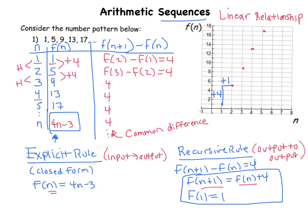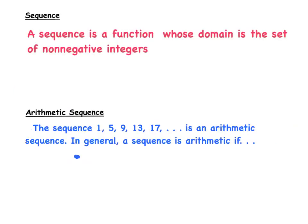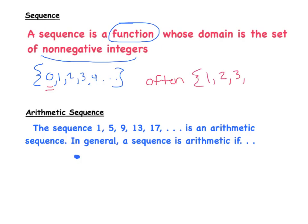So the technical definition of a sequence is that a sequence is a function, and so that explains why I created a table when I saw that list of numbers. It's a function whose domain is the set of non-negative integers—so non-negative integers are these numbers: 0, 1, 2, 3, 4, etc. That's the domain. That basically means the outputs are the numbers themselves—1, 5, 9, 13—but the domain are these non-negative integers. Very often, just to give you a heads up, we don't always start from zero. Often you might just see the list of positive integers as the domain, and it tends not to matter so much.